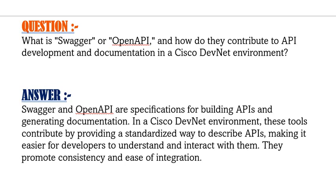The question is: what is Swagger or OpenAPI and how do they contribute to API development and documentation in a Cisco DevNet environment? Your answer should be: Swagger and OpenAPI are specifications for building APIs and generating documentation. In a Cisco DevNet environment, these tools contribute by providing a standardized way to describe APIs, making it easier for developers to understand and interact with them. They promote consistency and ease of integration.